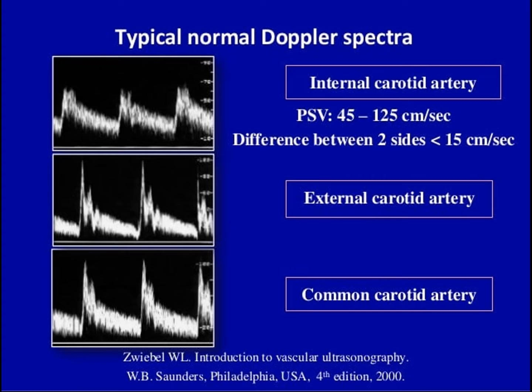We try to keep the angle less than 60 degrees. When scanning any vessel to get the peak systolic velocity, the velocities depend on the angle, so we have to keep the angle the same in all vessels of both sides. In addition to the internal carotid artery, external carotid artery, and common carotid, we will also assess the vertebral artery and subclavian arteries.